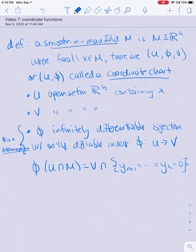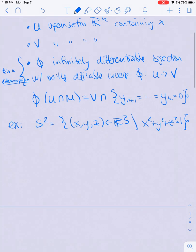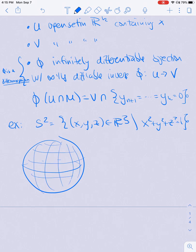So what's the point of this? Let's do an example. If I take S^2, which is all pairs (x,y,z) in R^3 such that x^2 + y^2 + z^2 = 1. Let's draw this.